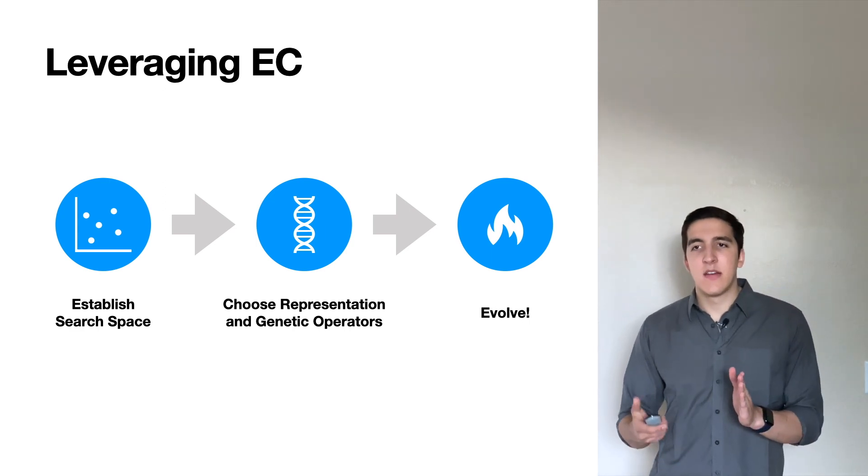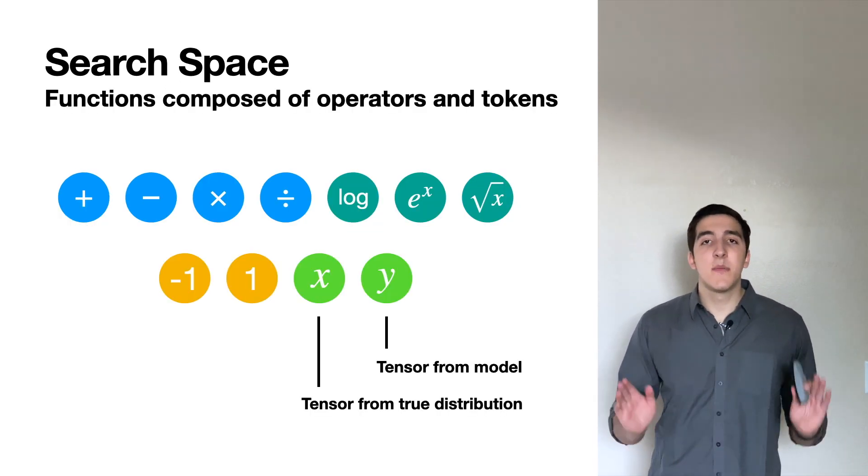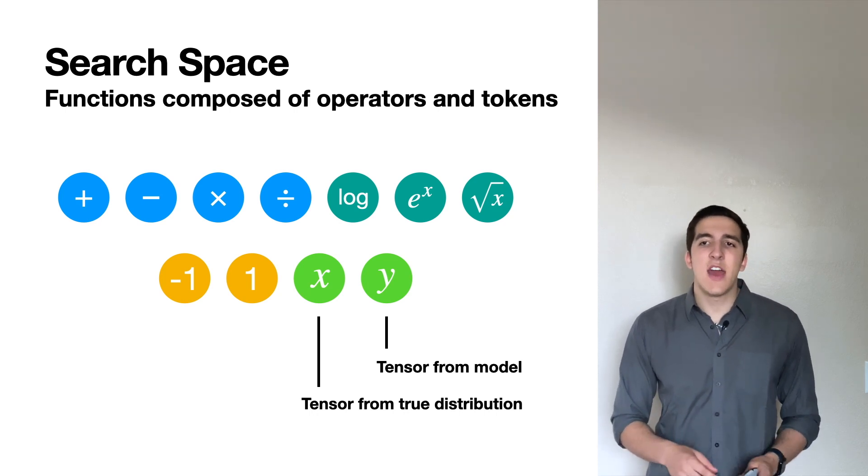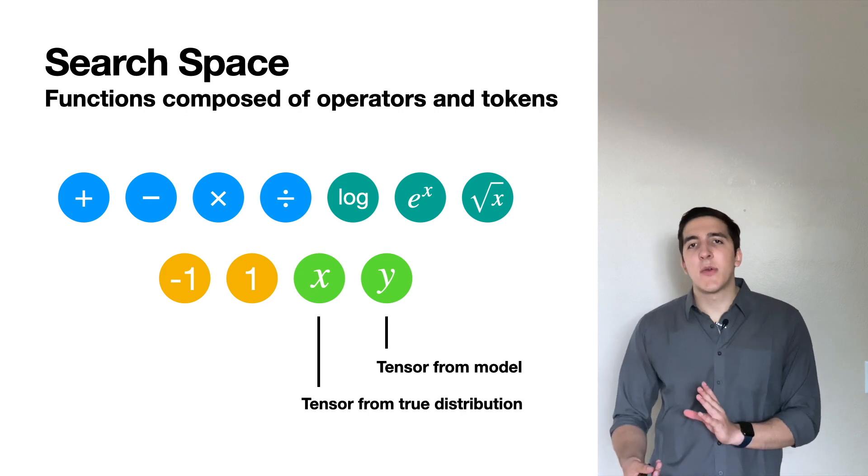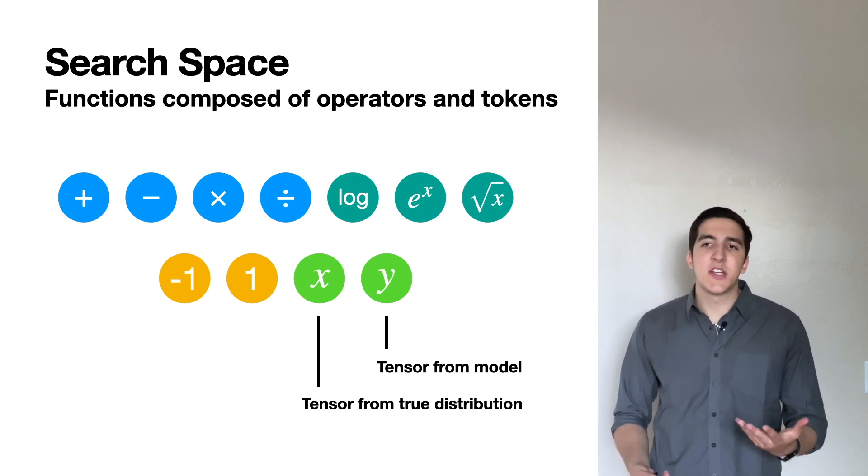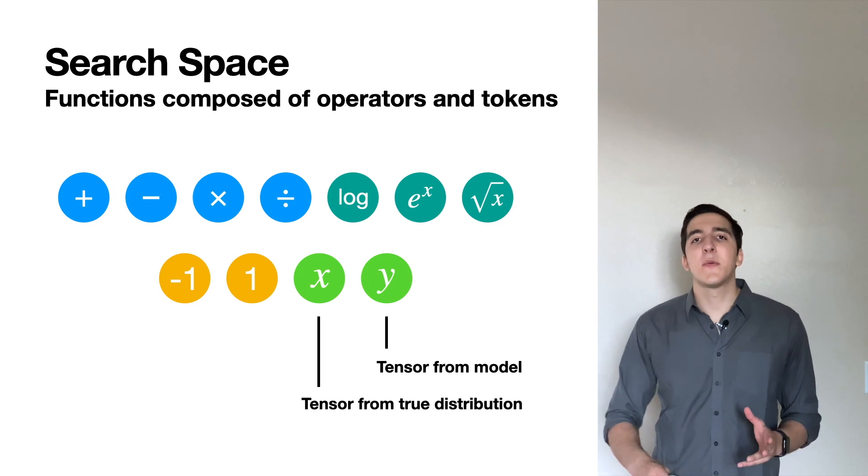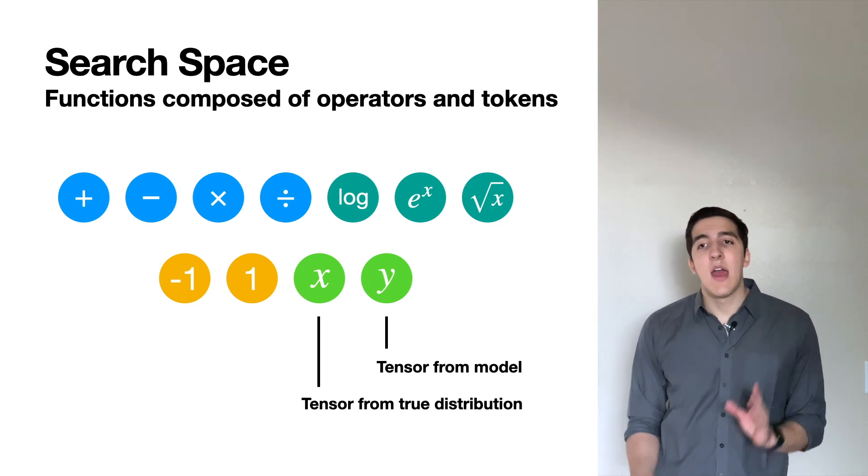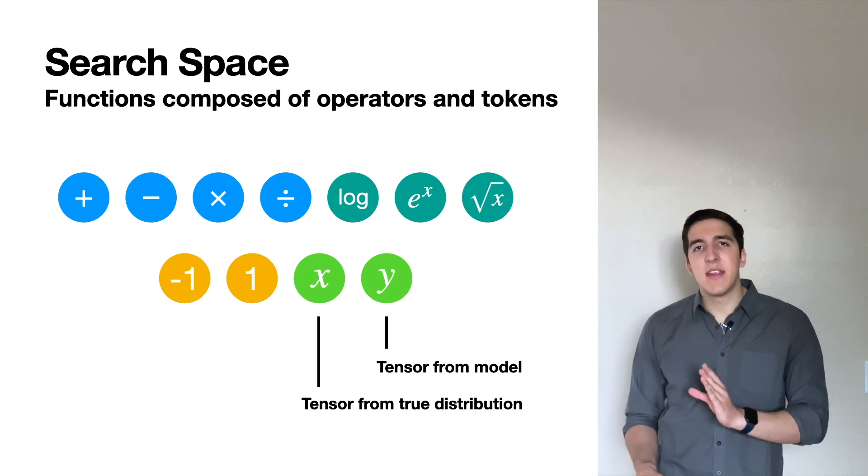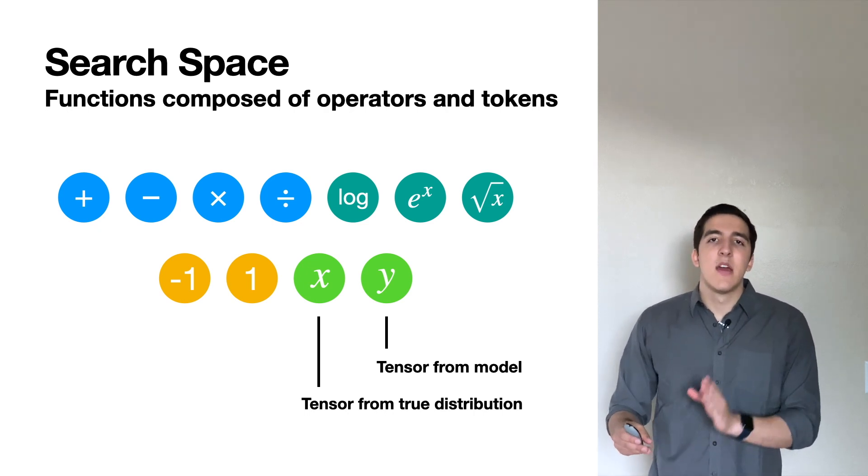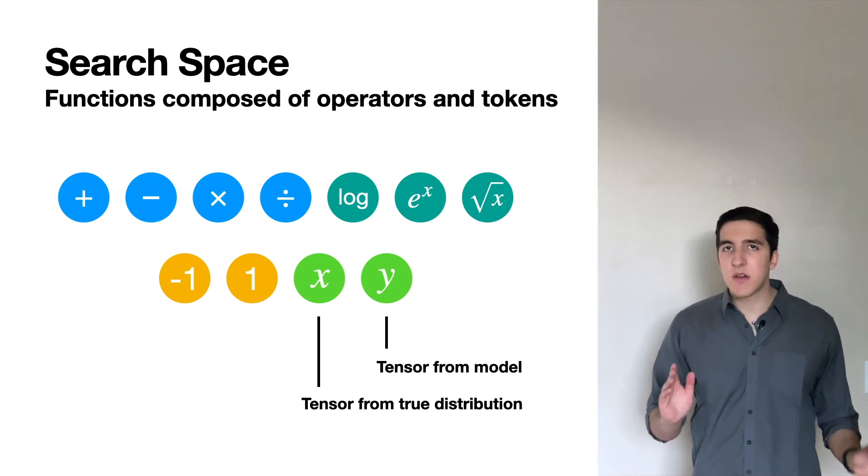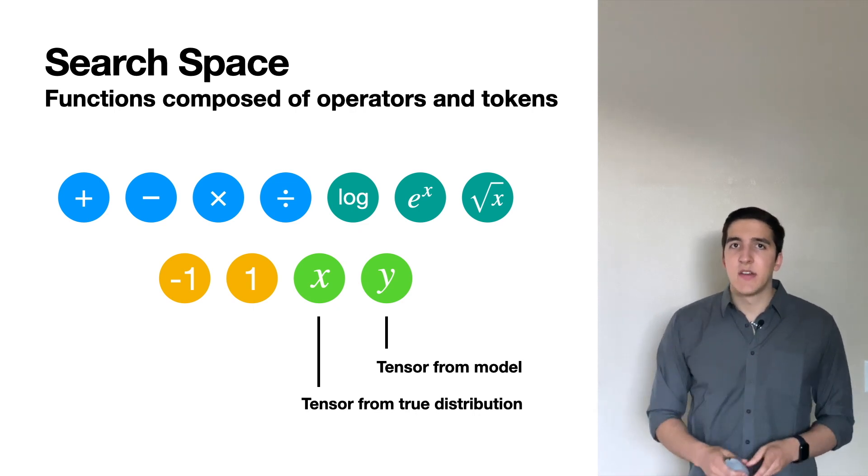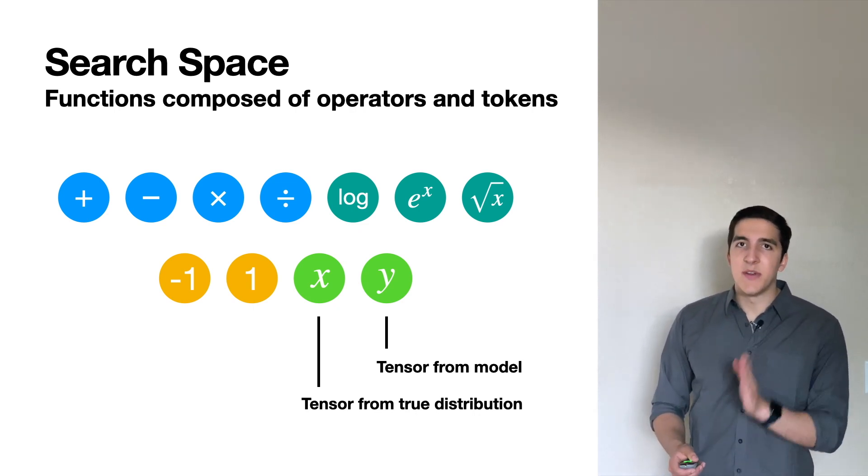So what does our search space look like? We are using functions composed of operators and tokens, and we have a selection that gives us a pretty wide range of functions that we can represent. We have multiplications, divisions, some unary operators such as logs, exponentiation, square roots, and then in terms of tokens, we have negative one, the number one, and then these x and y variables, which represent the labels and the estimated labels. You'll note we don't have any continuous values in here. These are all just discrete tokens. They are what they are and they don't change. So we'll talk about how we approach this limitation later.